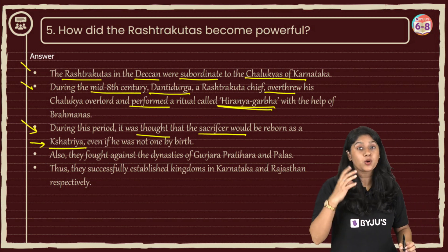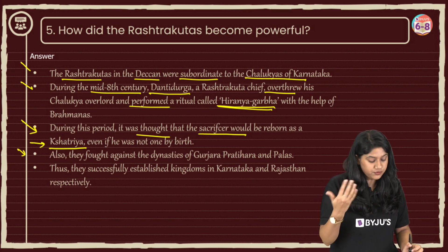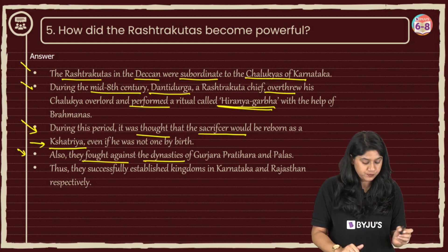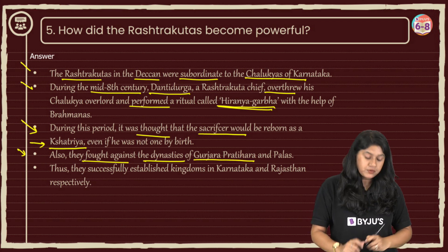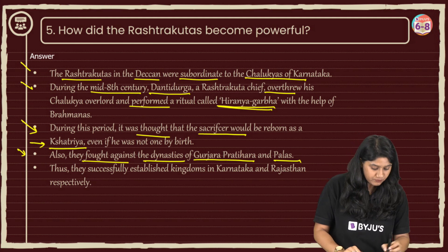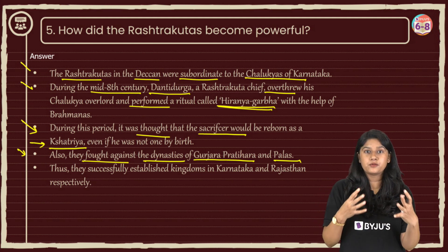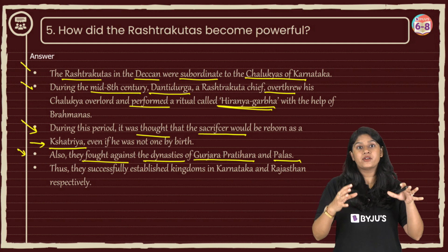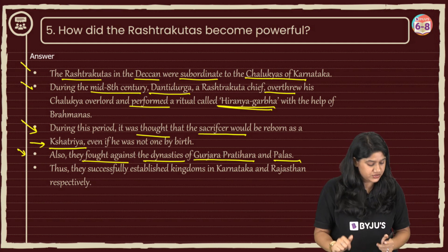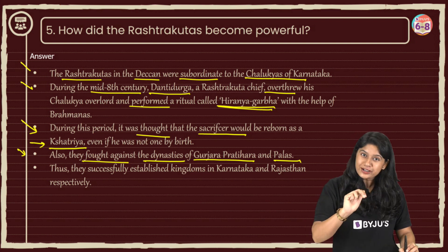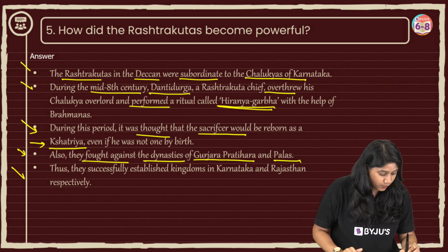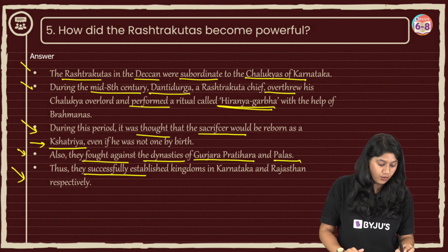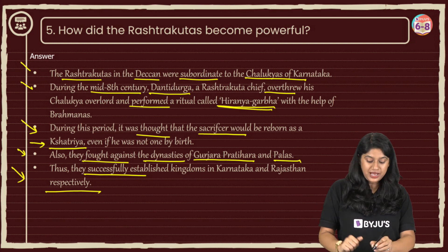After performing the ceremony, they fought with neighboring dynasties for power, including the Gurjara-Pratiharas and the Palas. The Gurjara-Pratiharas were ruling Gujarat and Rajasthan, and the Palas were in Bengal. As they grew their power, the Rashtrakutas fought with both dynasties and were also part of the struggle for the city of Kannauj. They successfully established their kingdom in Karnataka. This is how you can frame your answer for this particular question.